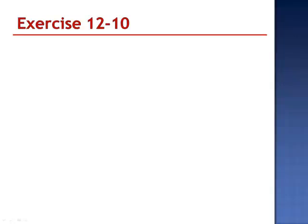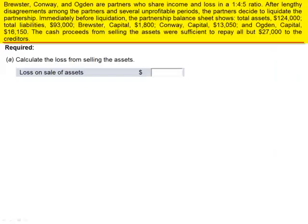Exercise 10. Brewster, Conway, and Ogden are partners who share income and loss in a 1-4-5 ratio. After lengthy disagreements among the partners and several unprofitable periods, the partners decide to liquidate the partnership.